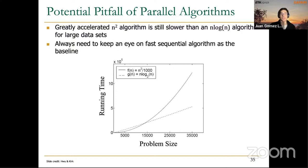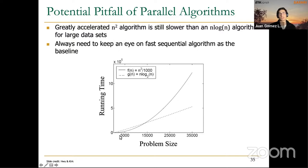Algorithm complexity relates to the execution time needed for a particular problem. We might easily design parallel algorithms that are not work efficient or have more complexity than needed. For example, comparing an O(n²) algorithm to an O(n log n) algorithm: for very small problems, the quadratic algorithm can actually be faster than the n log n algorithm.